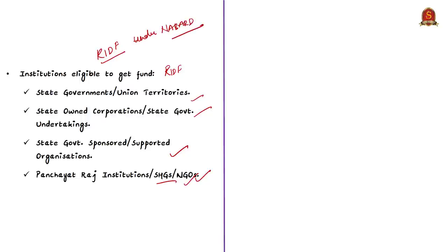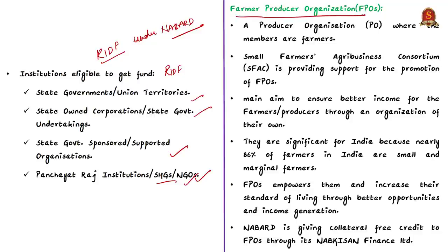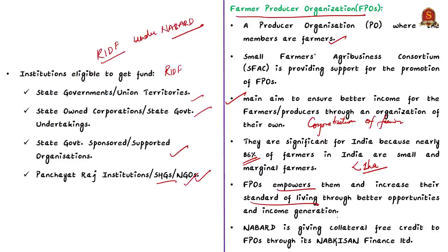There is one more term which we often see in use: FPOs, that is Farmer Producer Organizations. Simply put, it is a producer organization where the members are farmers. The main aim of an FPO is to ensure better income for farmers through an organization of their own — corporatization of farming. FPOs are significant for India because nearly 86% of farmers in India are small and marginal farmers, and the average landholding size is around 1 hectare. FPOs empower farmers and increase their standard of living through better opportunities and income generation.